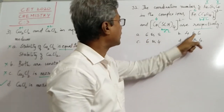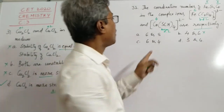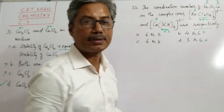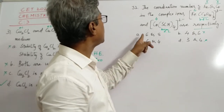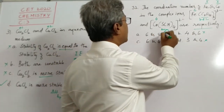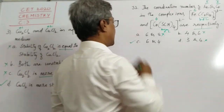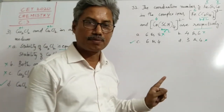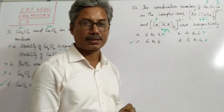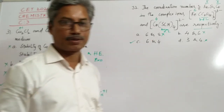Looking at the answer choices, six must be first. Six as the coordination number of Fe in that complex and four as the coordination number of cobalt in the cyano complex is the correct answer.